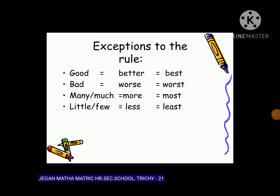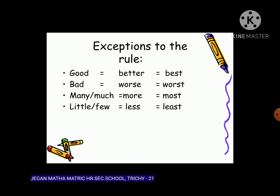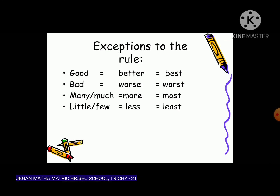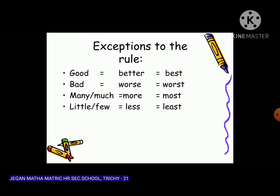Exceptions to the rule for superlative: good → better → best; bad → worse → worst; many/much → more → most; little/few → less → least. These are irregular forms and must be memorized.